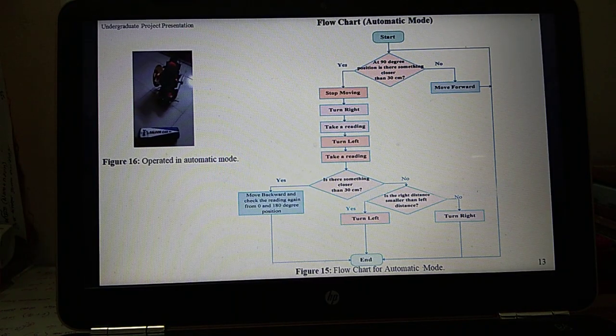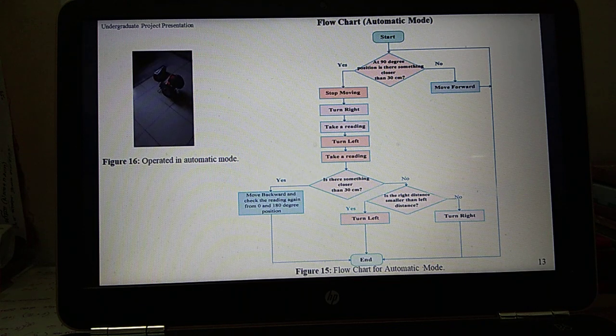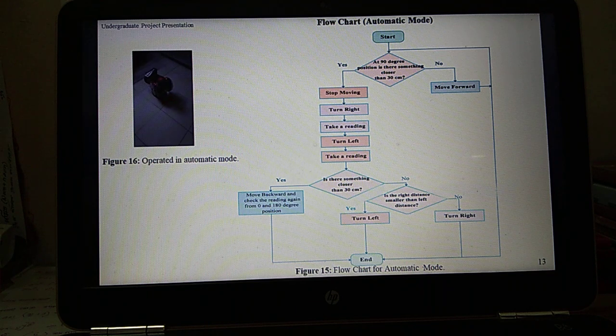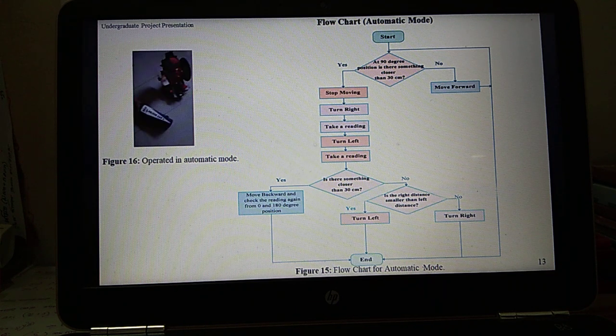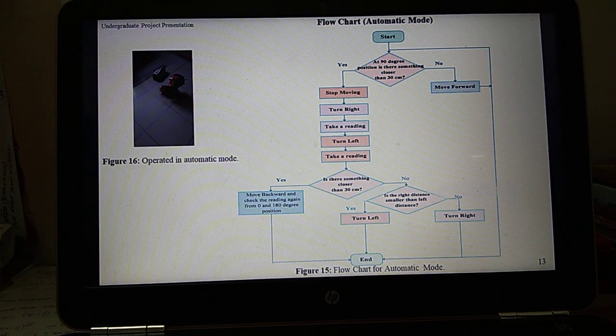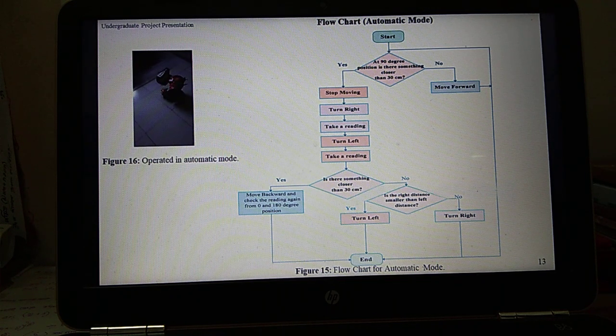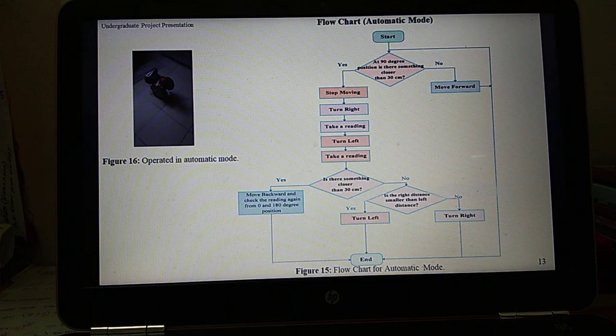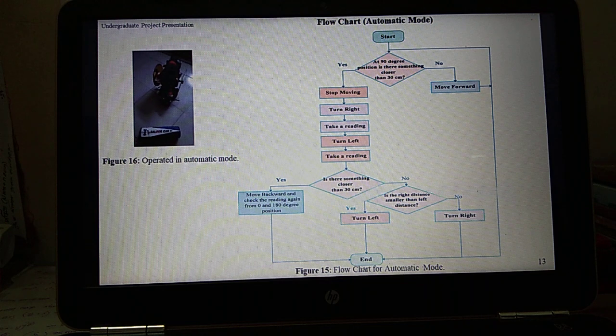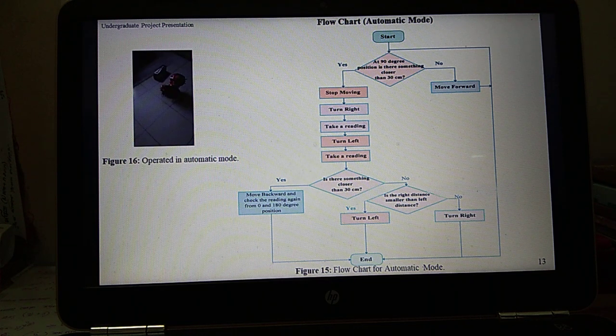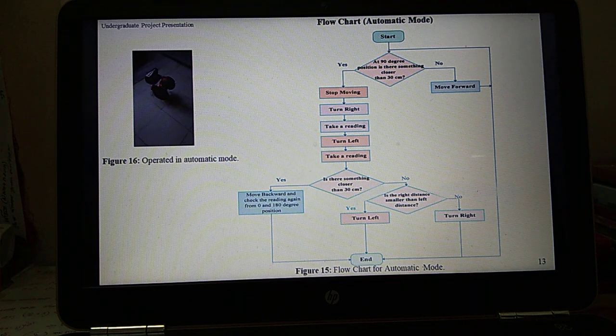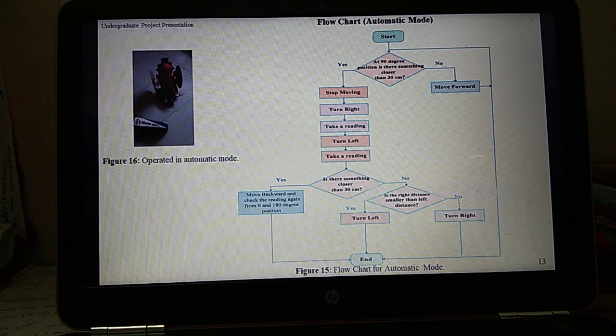If the reading from the sensor at 90 degree position is less than 30 centimeters, the wheelchair stops moving forward and starts taking the readings at 120 and 60 degree positions by tilting the servo. The position of the servo will be at 90 degrees at the beginning. If the reading from the sensor at 90 degree position is less than 30 centimeters, the wheelchair will stop moving forward, then it turns right and left by rotating the servo. These readings are then compared and the wheelchair will turn to the side where the reading is greater.